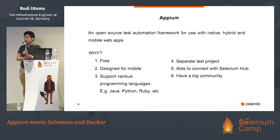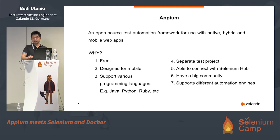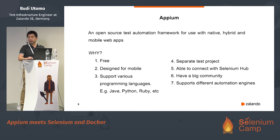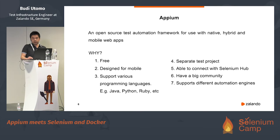We have a big community, so if you have questions or need support you can ask in our chat room called Gitter. And Appium now supports different automation engines — it now supports the Espresso engine as well. You can try it and give us feedback; it's quite new but you can try it out.